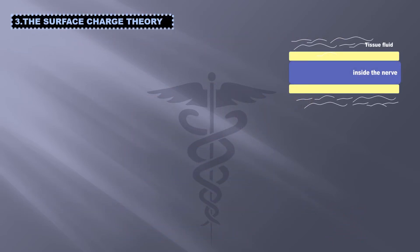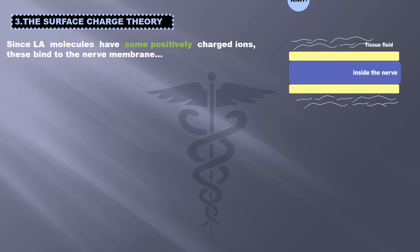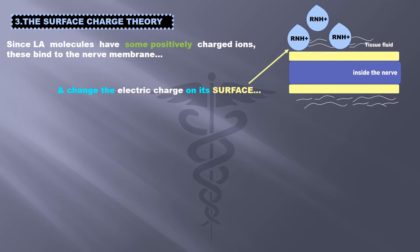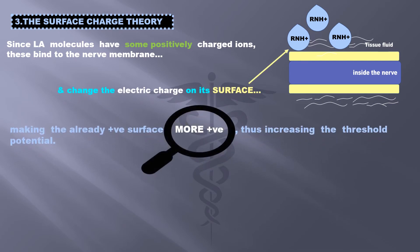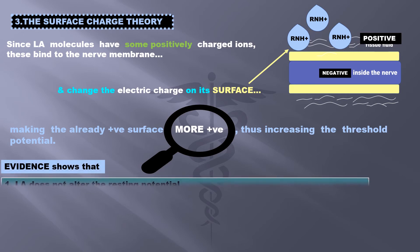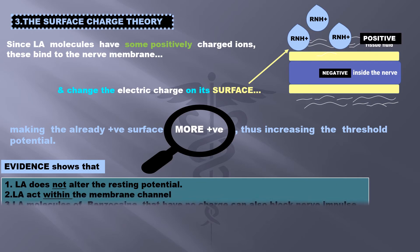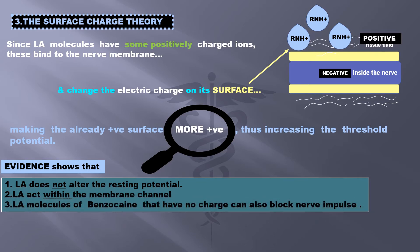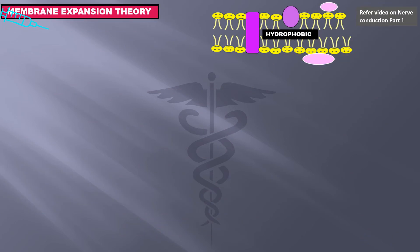Next is the surface charge theory. Since local anesthetic molecules have some positive charged ions, these ions bind to the nerve membrane and change the electric charge on its surface, making the already positive surface more positive, thus increasing the threshold potential. Evidence shows that local anesthetic does not alter the resting potential, so this theory is also not accepted.